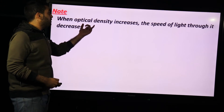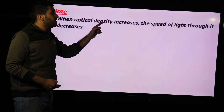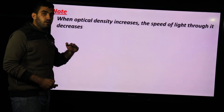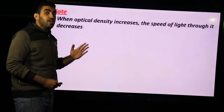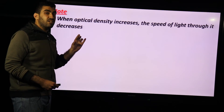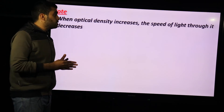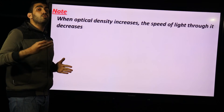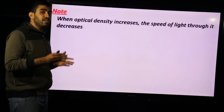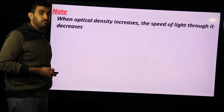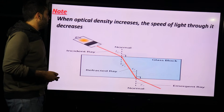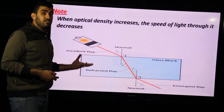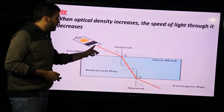Note: when the optical density of a medium increases, the speed of light through it decreases — they are inversely proportional. So light moves fastest in air, slower in water, and slowest in glass, because glass has the highest optical density.